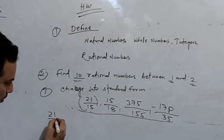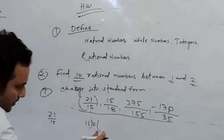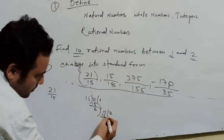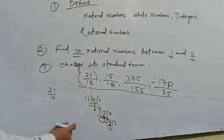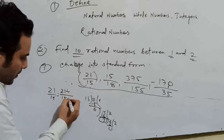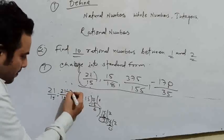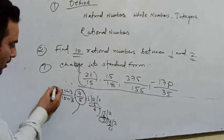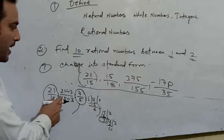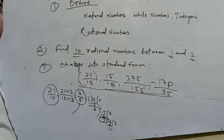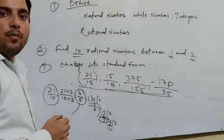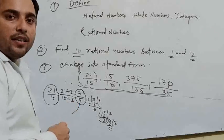For example, 21 by 15 — first find the HCF, which is 3. Divide 21 and 15 by 3, and you get 7 by 5. So 7 by 5 is the standard form of 21 by 15. Using this example, you can solve the remaining questions. In the next class, we will study equivalent fractions and the number line.